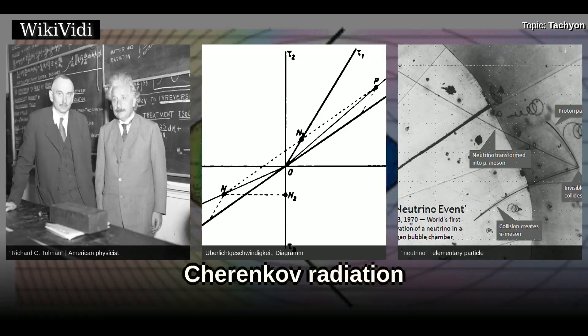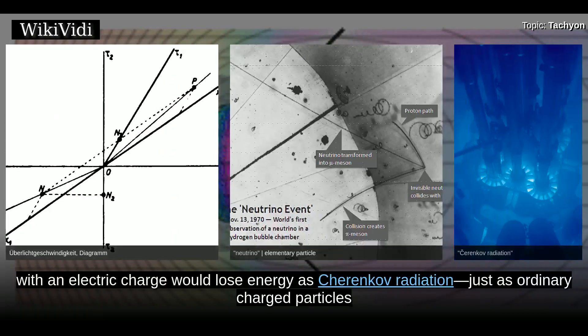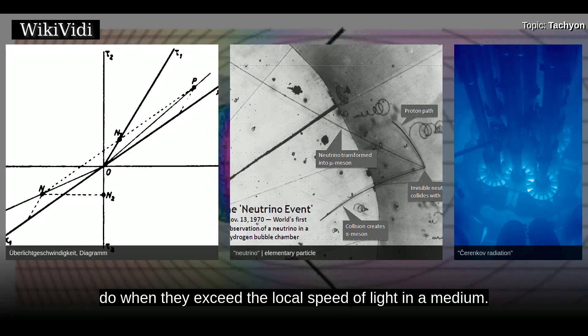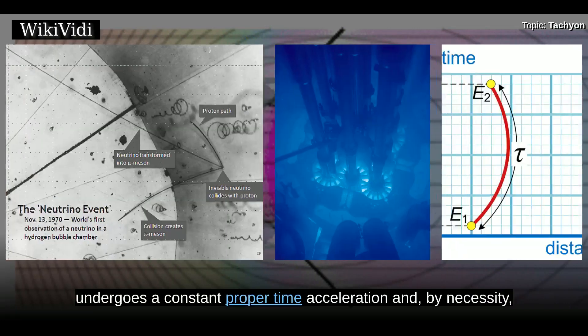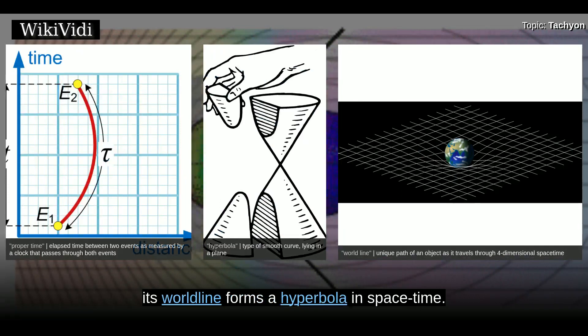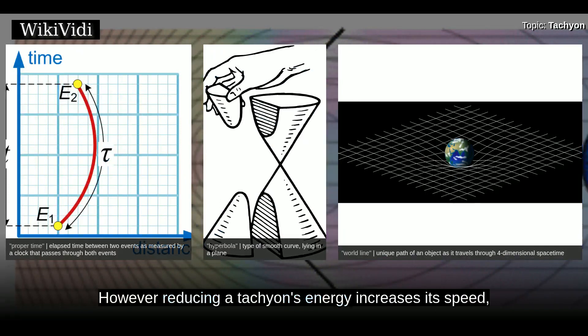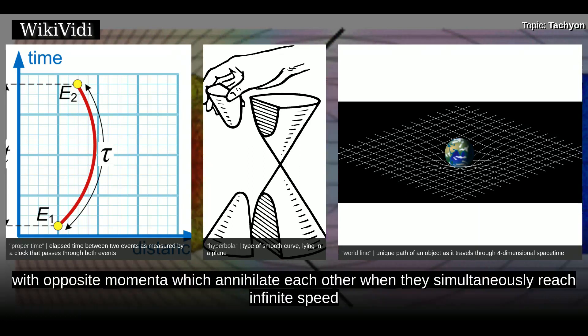Cherenkov radiation. A tachyon with an electric charge would lose energy as Cherenkov radiation, just as ordinary charged particles do when they exceed the local speed of light in a medium. A charged tachyon traveling in a vacuum therefore undergoes constant proper time acceleration, and by necessity its worldline forms a hyperbola in spacetime. However, reducing a tachyon's energy increases its speed, so that the single hyperbola formed is of two oppositely charged tachyons with opposite momenta which annihilate each other when they simultaneously reach infinite speed at the same place in space.